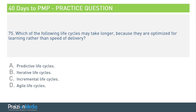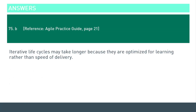Number 75. Which of the following life cycles may take longer because they are optimized for learning rather than speed of delivery? The best answer to this is Iterative — option B. Iterative life cycles may take longer because they are optimized for learning rather than speed. Agile Practice Guide, page 21.